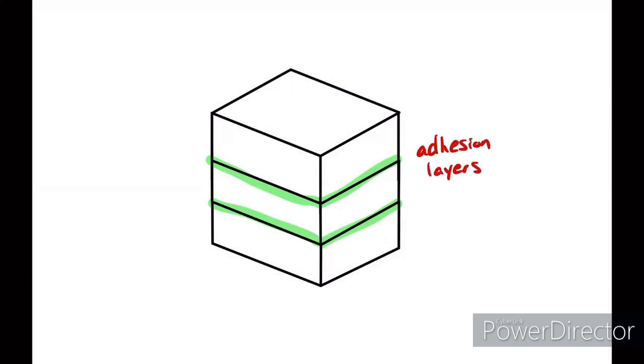And this adhesion between the layers is much weaker than the continuous strands of plastic that are laid down in a single layer. That means when a force is applied to the 3D printed part, it will most likely fail based on how strong these bonds are between the layers instead of how strong the plastic is. But that doesn't mean 3D printed parts are weak all around.